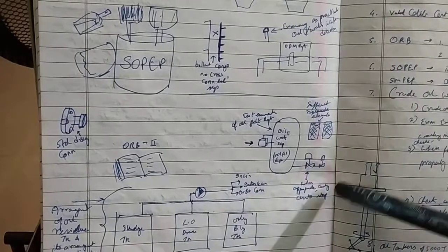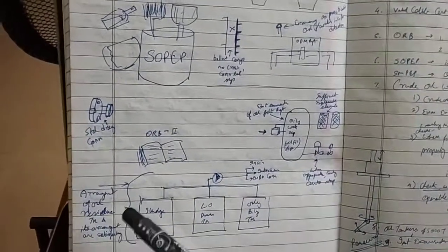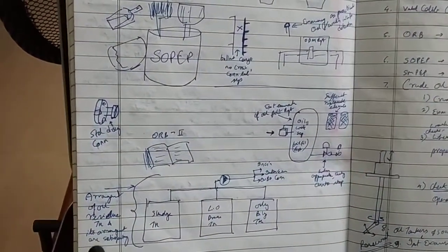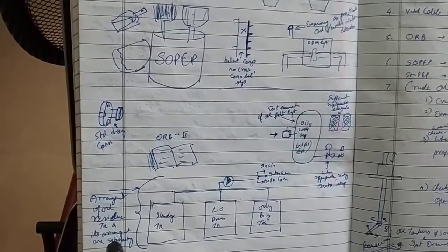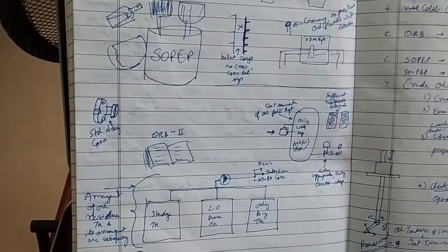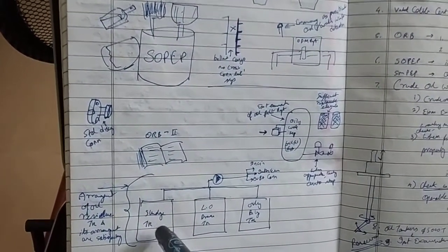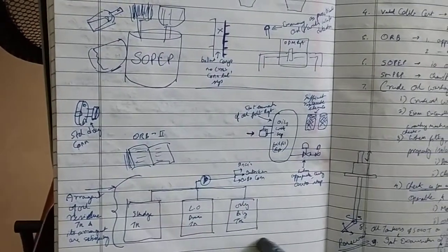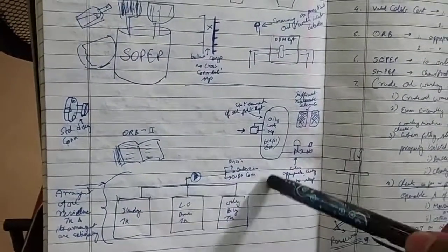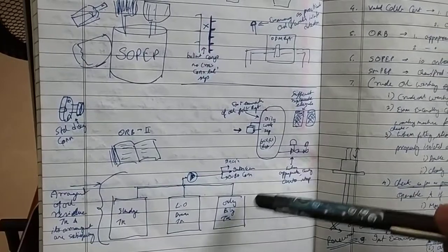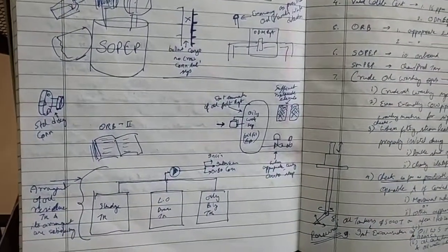Moving on, the arrangement of oil tank residue should be there in place and that has to be satisfactory. So you will have your sludge tank or lube oil drain tank, oily bilge tank, and the pumping arrangement to your incinerator or your shore connections.